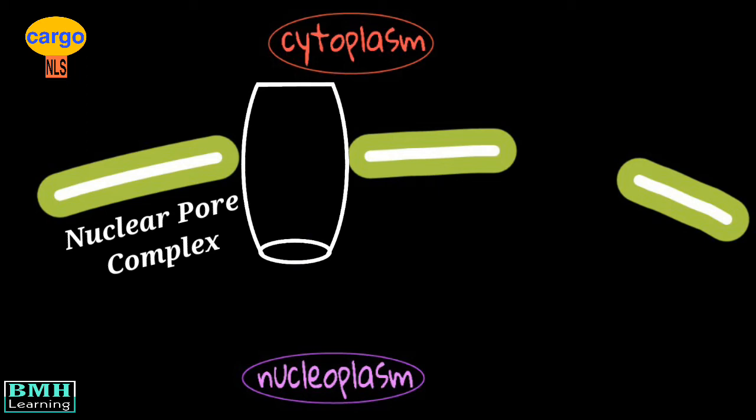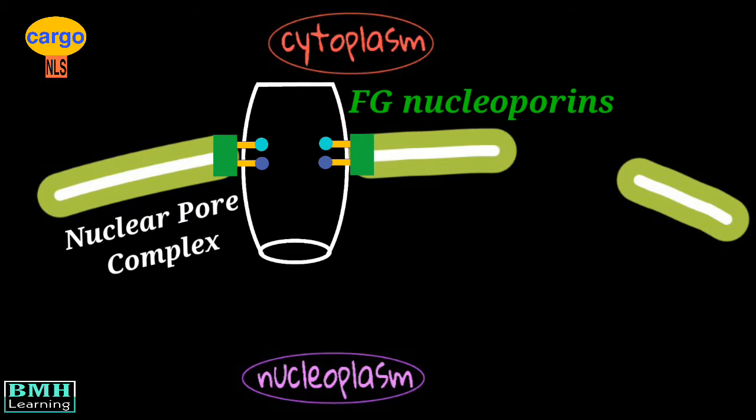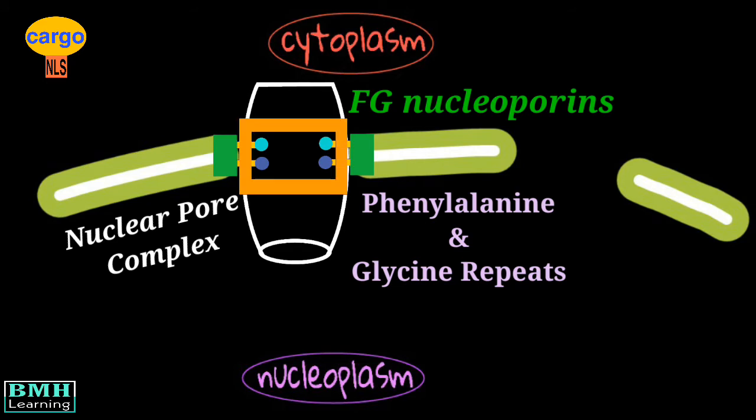Furthermore, the constituent building blocks of the nuclear pore complex are the nucleoporins, which play a massive role in the transport process of the proteins. One such type of nucleoporins are the FG nucleoporins, which contain repeating sequences of phenylalanine and glycine peptide repeats.